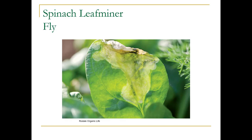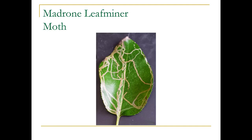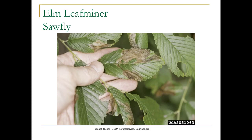Here we have a spinach leaf miner — it only goes for spinach, and you can see it's more of a blotchy mine caused by the larva of a fly. This is the madrone leaf miner, caused by a moth. There's also a leaf-miner sawfly that will be appearing soon on Camperdown elm — almost every Camperdown elm is going to end up looking like this. And here's a poplar black mine beetle, another type of insect that causes mines.